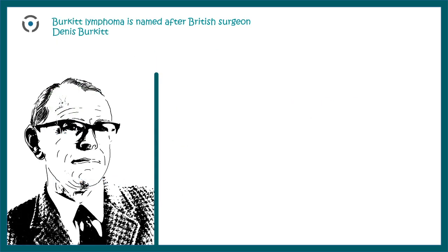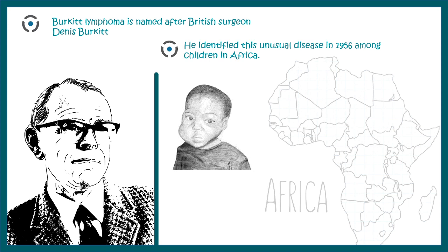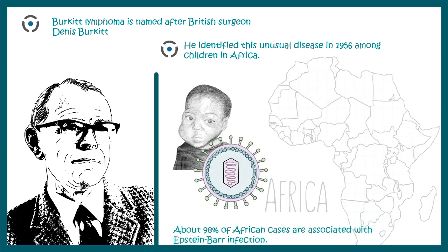Burkitt lymphoma is named after British surgeon Denis Burkitt, who discovered this phenomenon in African children around 1956. It is important to note that in African children, Burkitt lymphoma is majorly associated with Epstein-Barr virus infection, though the mechanism remains unclear — this is a notable clinical observation.